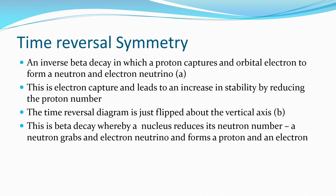In an inverse beta decay in which a proton captures an orbital electron to form a neutron and an electron neutrino, this is an electron capture and leads to an increase in stability by reducing the proton number. This is like the radioactive decay we saw way back in unit one. It's like a time reversal. We just flip the diagram around. This is beta decay whereby a nucleus reduces its neutron number. A neutron grabs an electron neutrino and forms a proton and electron. We're showing examples of how you can literally just flip the whole interaction around. And that's what we call time reversal symmetry.